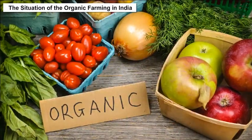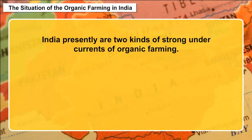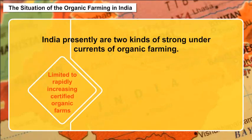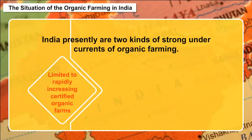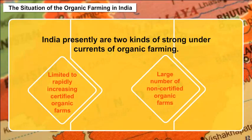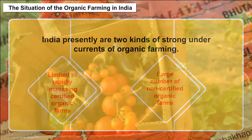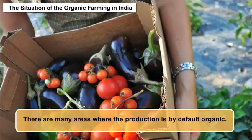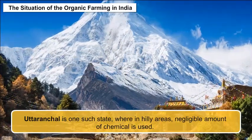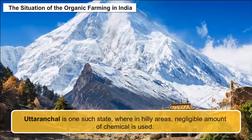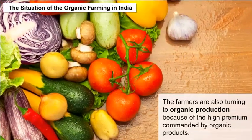Presently in India, there are two kinds of strong undercurrents of organic farming: from limited to rapidly increasing certified organic farms mainly producing for a premium price in domestic or export markets, and a large number of non-certified organic farms which produce for their own households accessing local markets only. There are many areas where production is by default organic. Uttarakhand is one such state where in hilly areas a negligible amount of chemical is used. Farmers are also turning to organic production because of the high premium commanded by organic products.